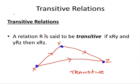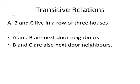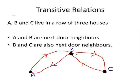Now, let's look at an example. A, B, and C live in a row of three houses. A and B are next door neighbors, B and C are also next door neighbors. So let's look at this in the context of a digraph. Here the relation is next door neighbor. So we would say ARB and BRC, where R means next door neighbor.